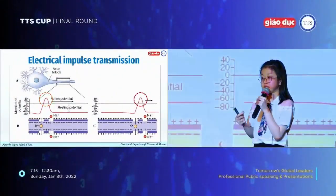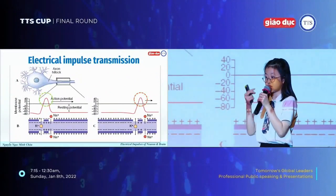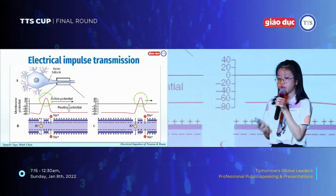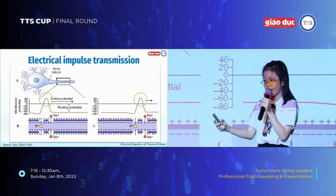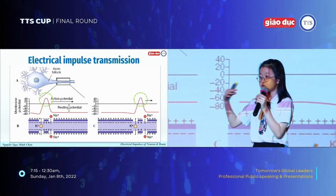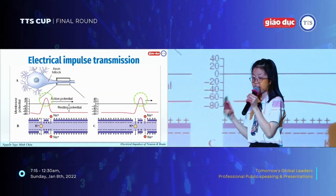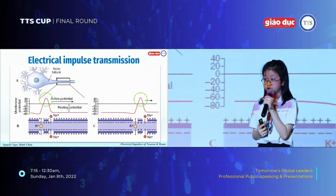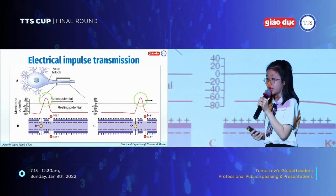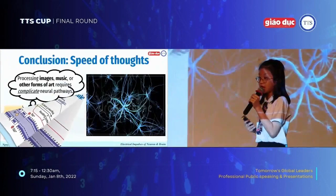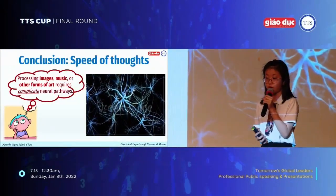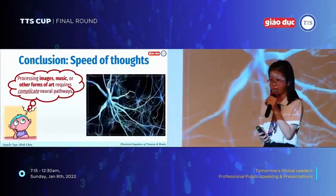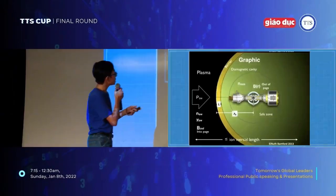And because this charge is so large, it's overshooting, so the charge needs to spread out. It spreads to the right according to the analogy that negative charges attract positive charges. Due to this, processing images, music, or other forms of art requires complicated neural pathways.